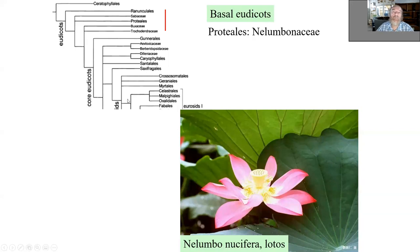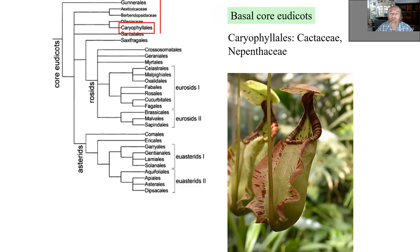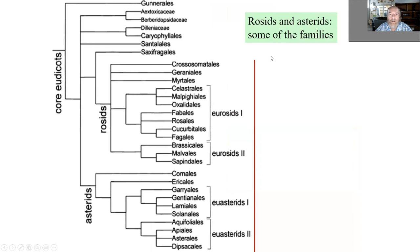Now we go from monocots further down in the phylogeny to basal eudicots. There is nothing for us except we can mention Nelumbo nucifera — the lotus. Then we have basal core eudicots — nothing really important except for Caryophyllales, which have Cactaceae and pitcher plants, Nepenthaceae.